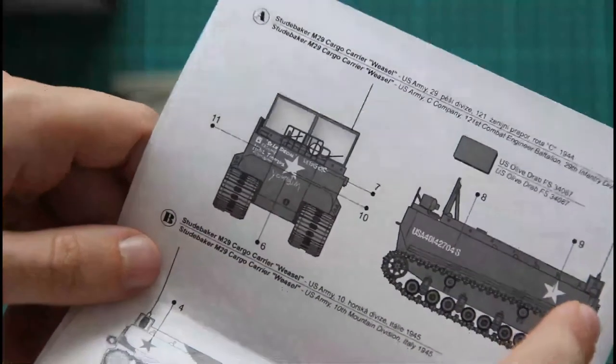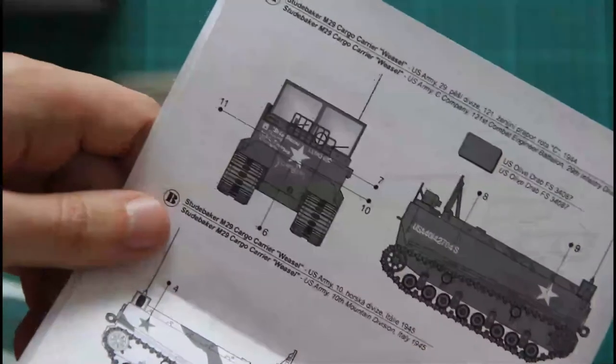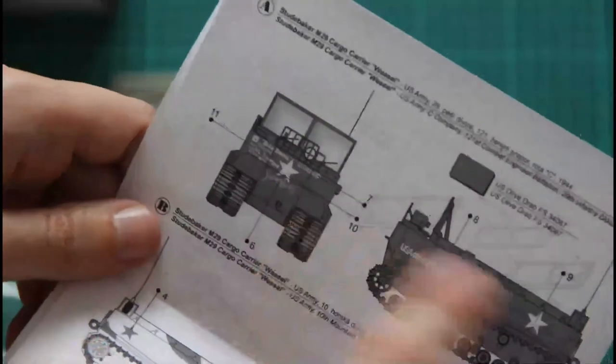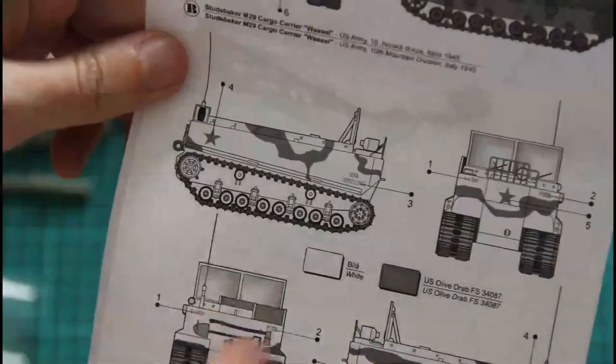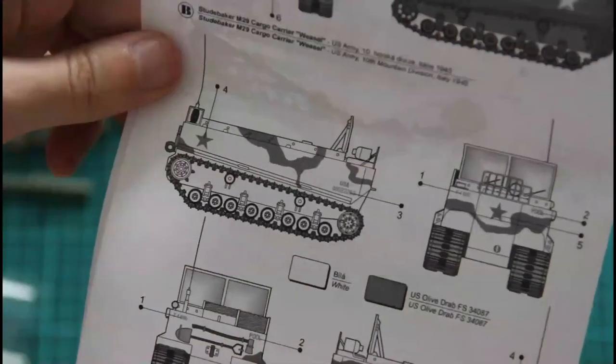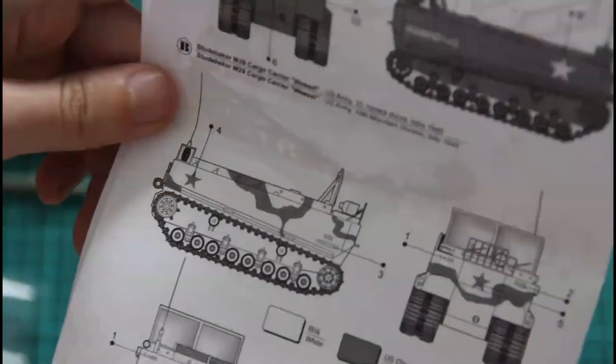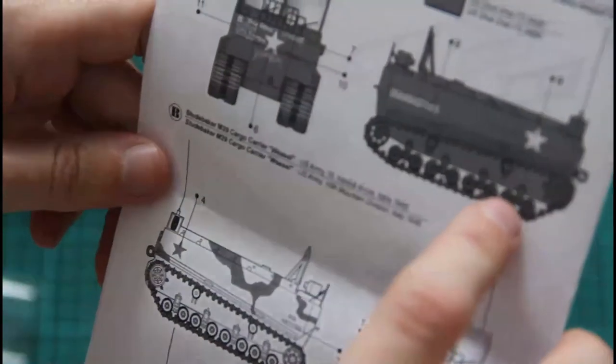Quite surprising that there is no short history note about this model. But here we have a detailed painting guide on the model. One is olive drab, and another one is white and olive drab. Both were used in Italy, I guess. So this is quite nice.